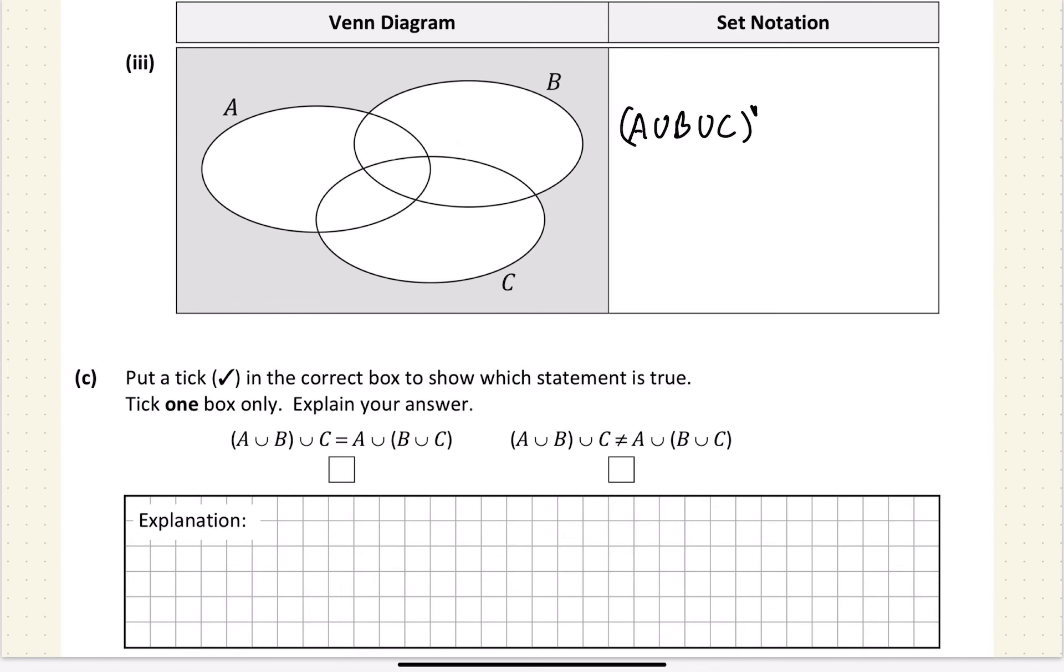Part C: Put a tick in the correct box to show which statement is true. Tick one box only and explain your answer. So this is the answer, and my reasoning is it is the associative property of sets. Or in other words, it doesn't matter where you put the brackets.